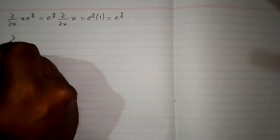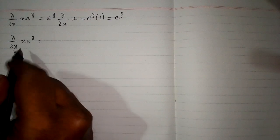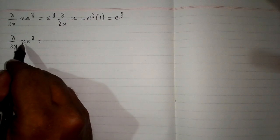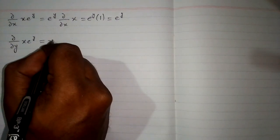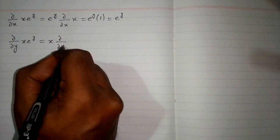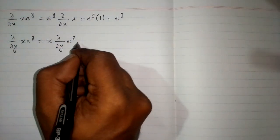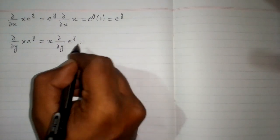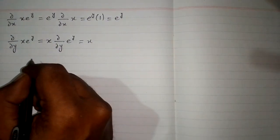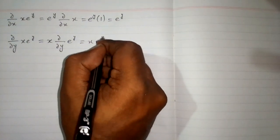Now we will take the partial derivative of the same function with respect to y. Now we will treat x as constant. So first we will write x, then the partial derivative of e to the power y with respect to y. And we know that the partial derivative of e to the power y is e to the power y.